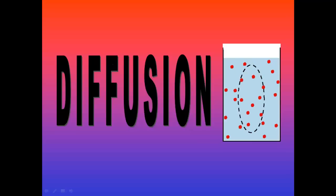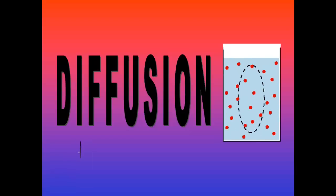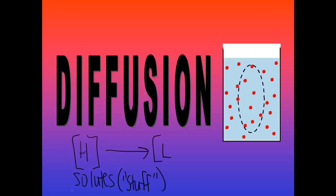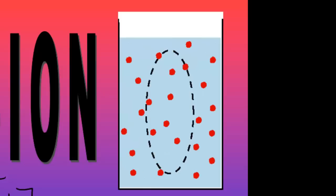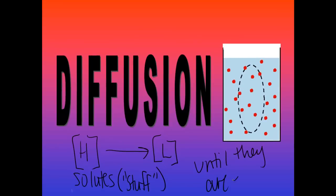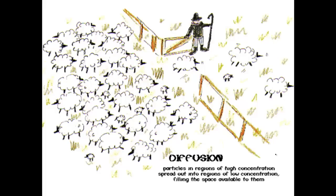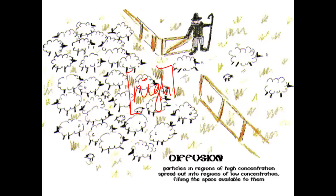Diffusion is the process of molecules moving from a high concentration of solutes — the stuff, the molecules — to where there's a low concentration of them. Here we start with a high concentration on the inside of the cell, and molecules move to where there's a low concentration, until they reach equal concentrations on either side of the membrane — equilibrium. Think of it like lots of sheep on one side of a gate: they move from where there's a high concentration of sheep to where there's a low concentration.